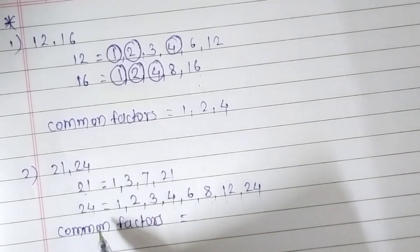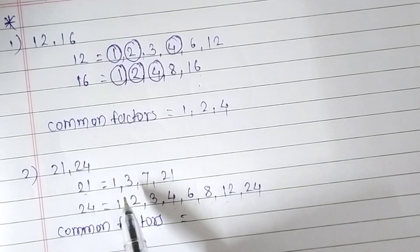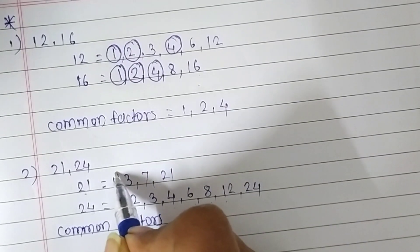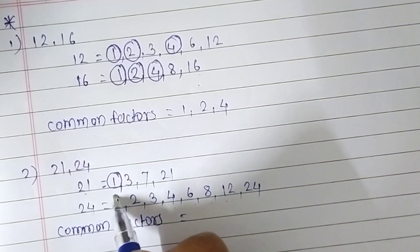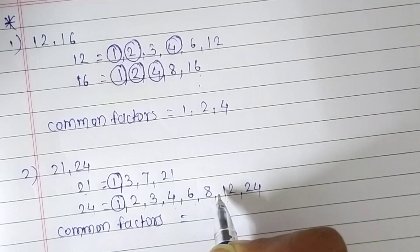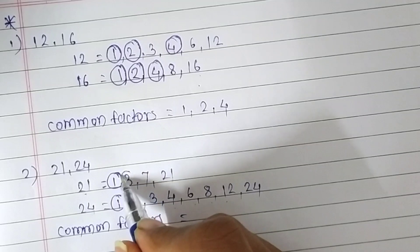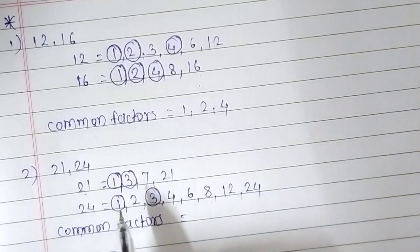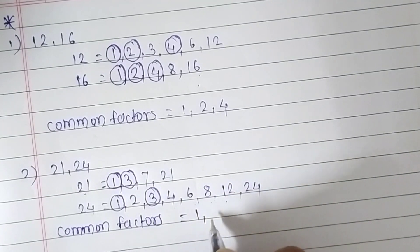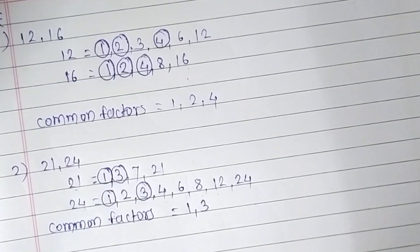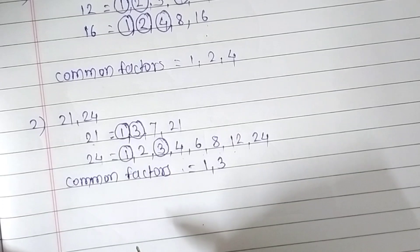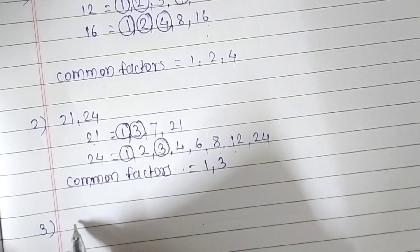Now we find the common factors between 21 and 24. We circle the common numbers. 1 is common, and 3 is common. Only 1 and 3 appear in both lists. So the common factors of 21 and 24 are 1 and 3.